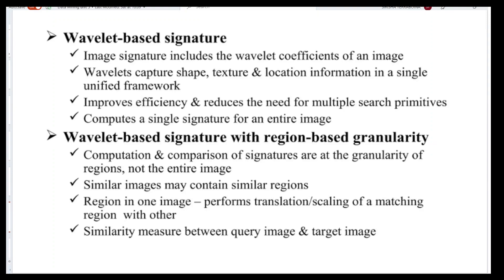Wavelet based signature means the image signature includes the wavelet coefficients of each image. The wavelet captures shape, texture, and location information in a single unified framework, improving efficiency and reducing the need for multiple search primitives. It computes only one single signature for an entire image.